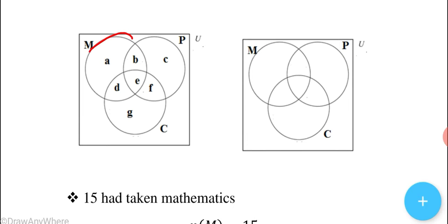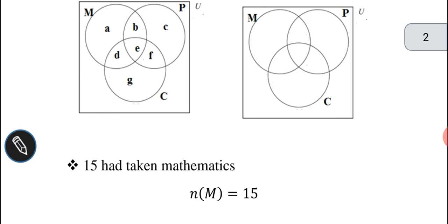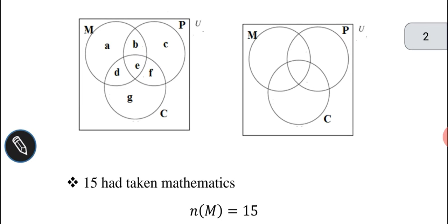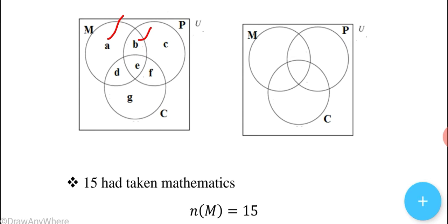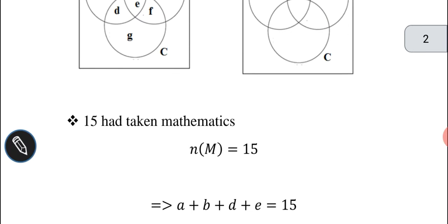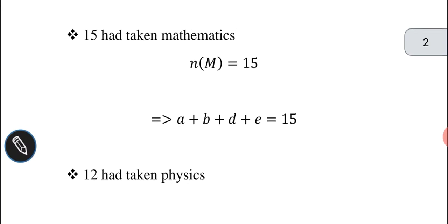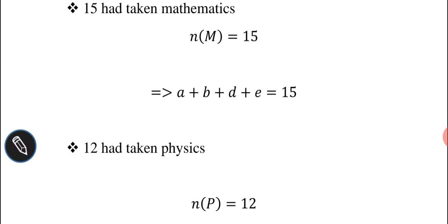In the mathematics circle, we have regions A, B, D, and E. So A + B + D + E = 15. Given that 12 had taken physics, we can write N(P) = 12.